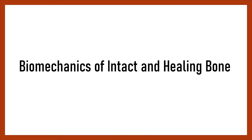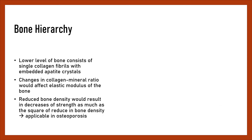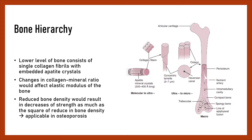Biomechanics of intact and healing bone — Bone hierarchy: The low level of bone consists of single collagen fibrils with embedded apatite crystals. Changes in the collagen-mineral ratio would affect the elastic modulus of the bone. Reduced bone density would result in decreases of strength as much as the square of the reduced bone density, which is applicable in osteoporosis.